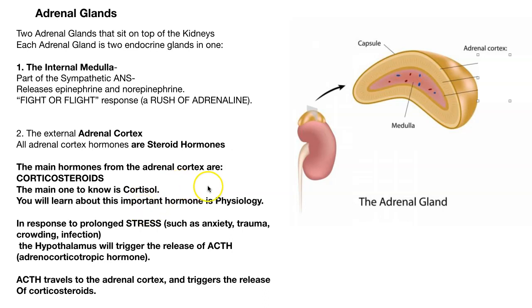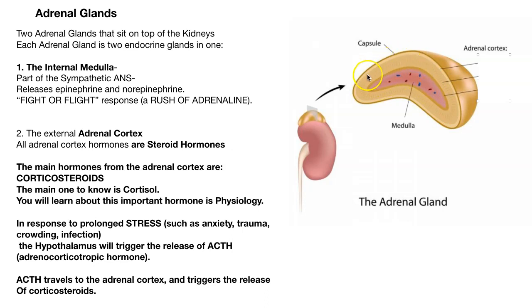Short-term stress — like running away from a tiger — is handled by the sympathetic autonomic nervous system coming from the adrenal medulla. Long-term stress response comes from the adrenal cortex with the release of cortisol and corticosteroids.